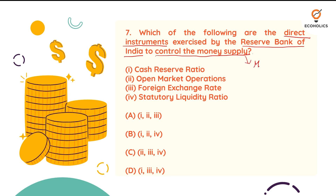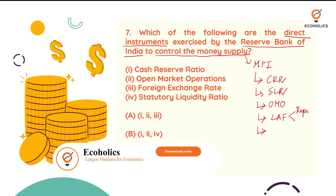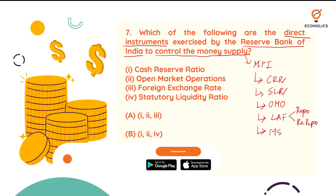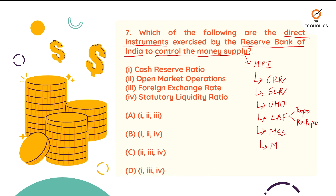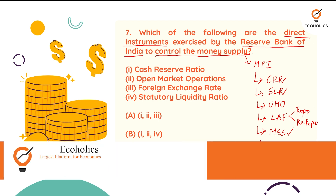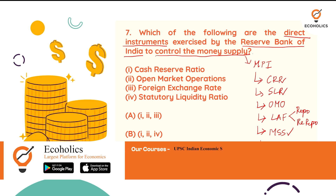This is a very direct question regarding monetary policy instruments. Under monetary policy instruments you would have come across CRR, SLR, OMO (open market operations), LAF — which includes repo and reverse repo — bank rates, MSS (market stabilization scheme), and MSF. All these are instruments used to control the money supply exercised by the Reserve Bank of India.